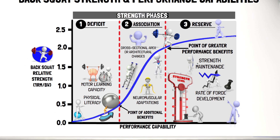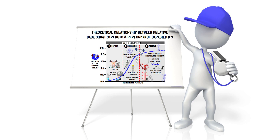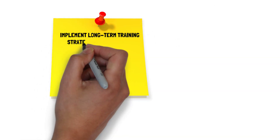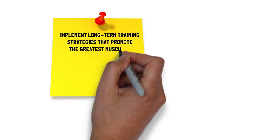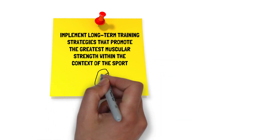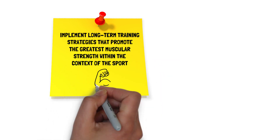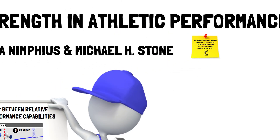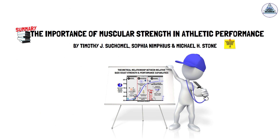That concludes the three strength phases of the model based on the back squat. One of the key recommendations from the article is to implement long-term training strategies that promote the greatest muscular strength within the context of the sport. Go and check out the full article — the link is in the description. Thanks for listening, folks.